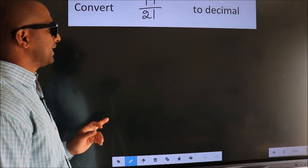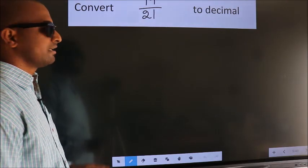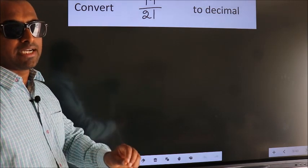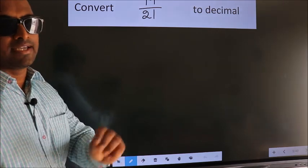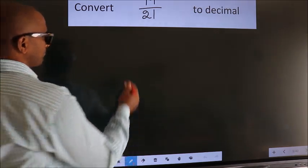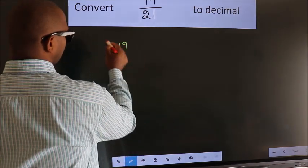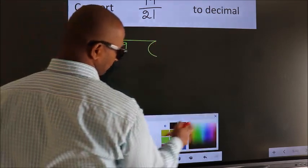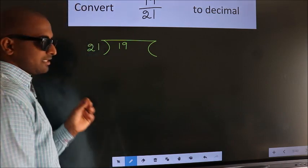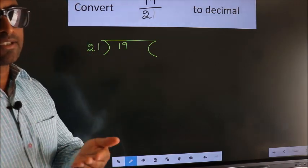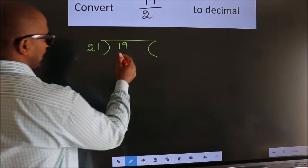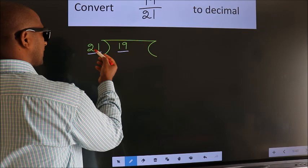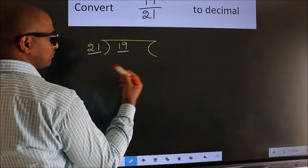Convert 19/21 to decimal. To convert this to decimal we have to divide, and to divide we should frame it in this way: 19 here, 21 here. This is your step 1. Next, here we have 19 and 21 — 19 is smaller than 21, so what we should do is...